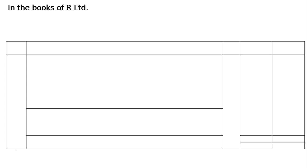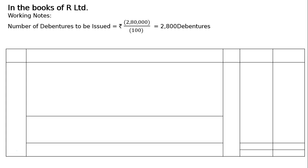In the books of R Limited — Working Notes: Number of debentures to be issued = Rs. 2,80,000 / Rs. 100 (face value of debentures) = 2,800 debentures.